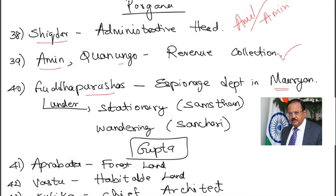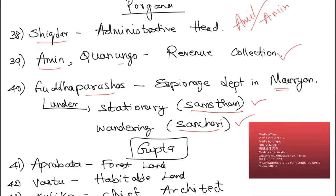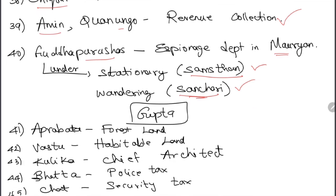Under Guddha Purushas, there were two types of spies: Samstha were stationary spies, and Sanchari were wandering spies who moved around gathering information — like the IB today, or the character Nambi in the Ponniyin Selvan movie.